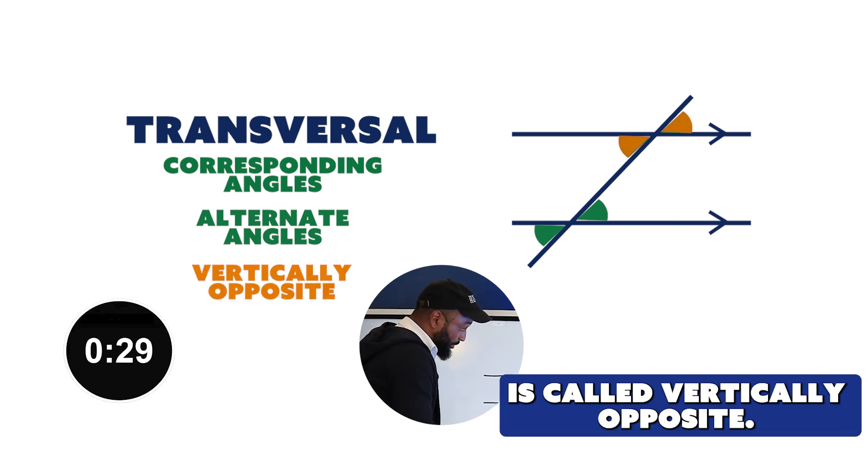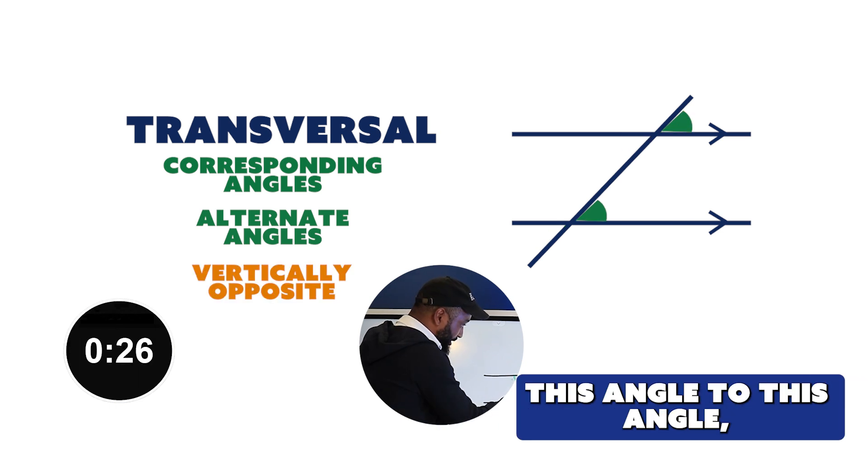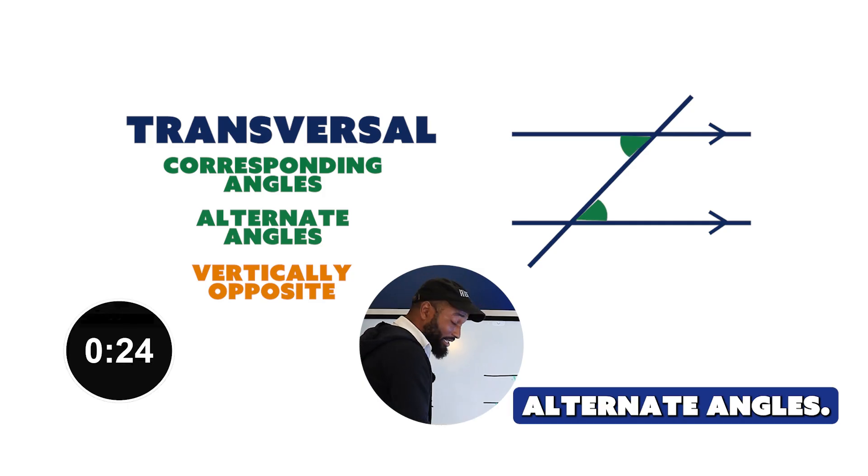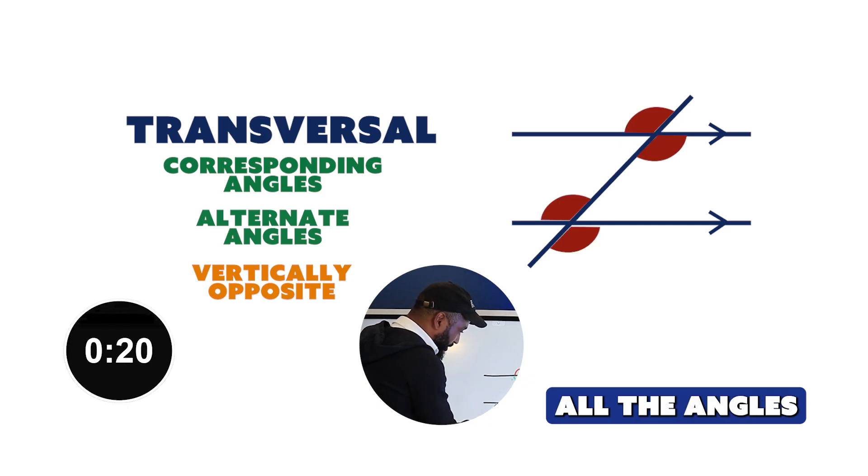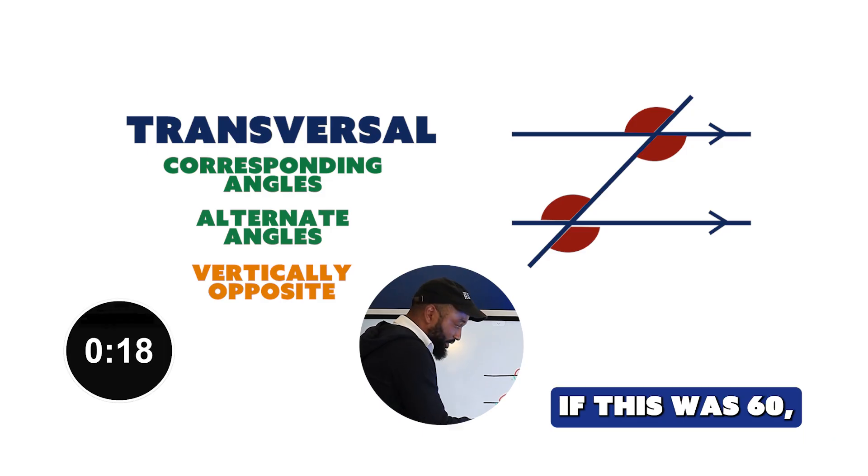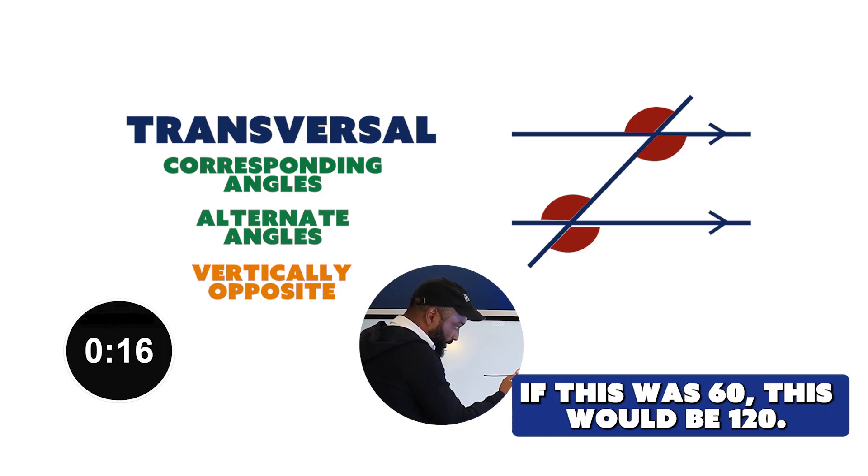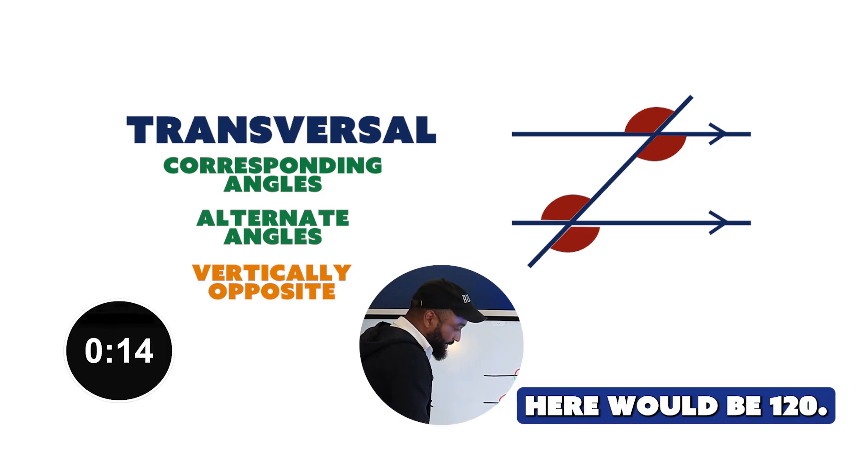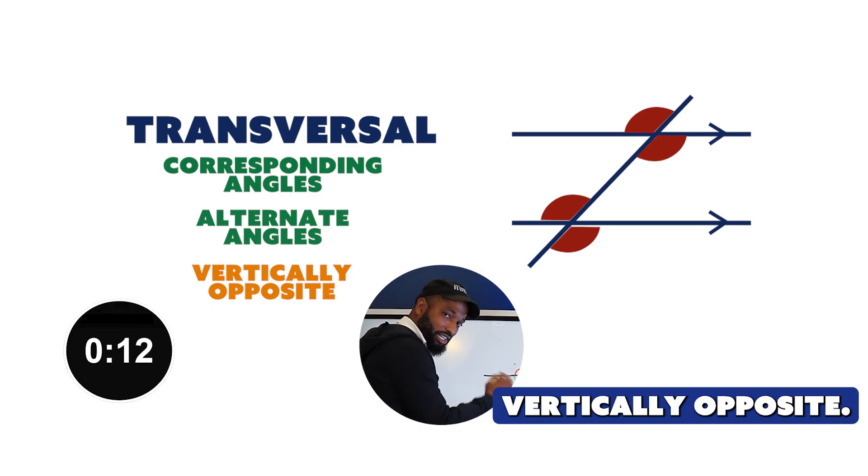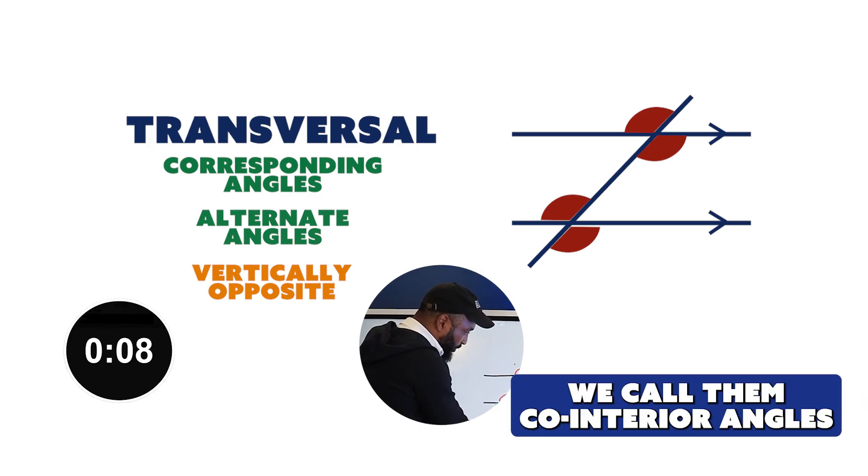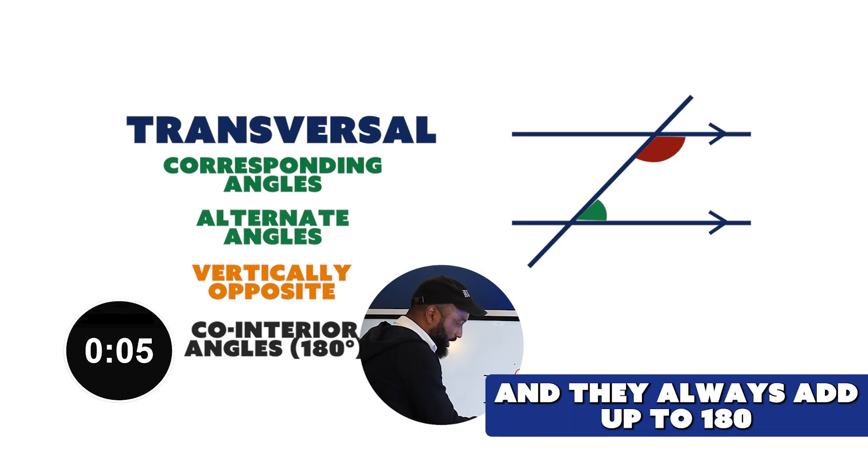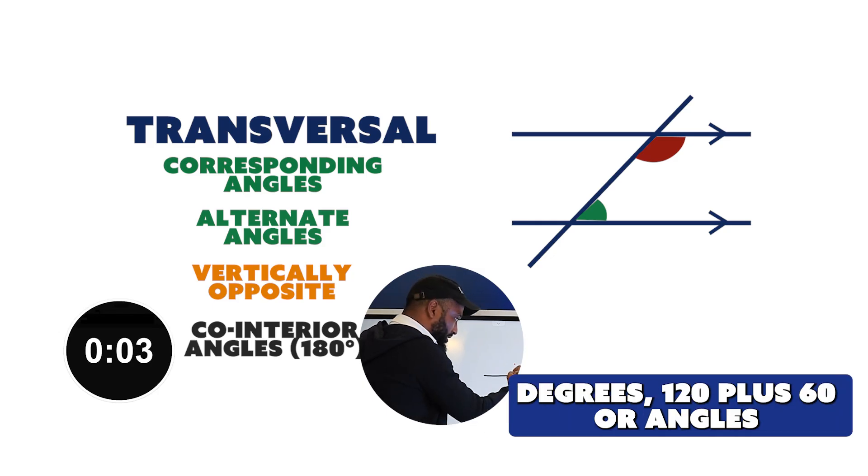If this was 60 degrees, everything in green is also 60 degrees. Vertically opposite angles are equal. All the angles in red here would be 120. There's a little relationship between these two - we call them co-interior angles, and they always add up to 180 degrees.